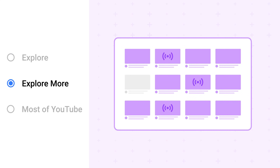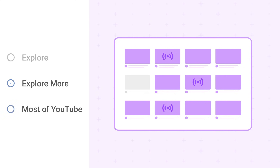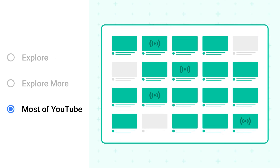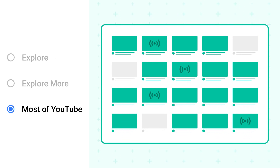The Explore More option has content that generally aligns with content ratings for viewers ages 13 and up, and does include live streams. And the Most of YouTube option will contain almost all videos on YouTube except for age-restricted content.